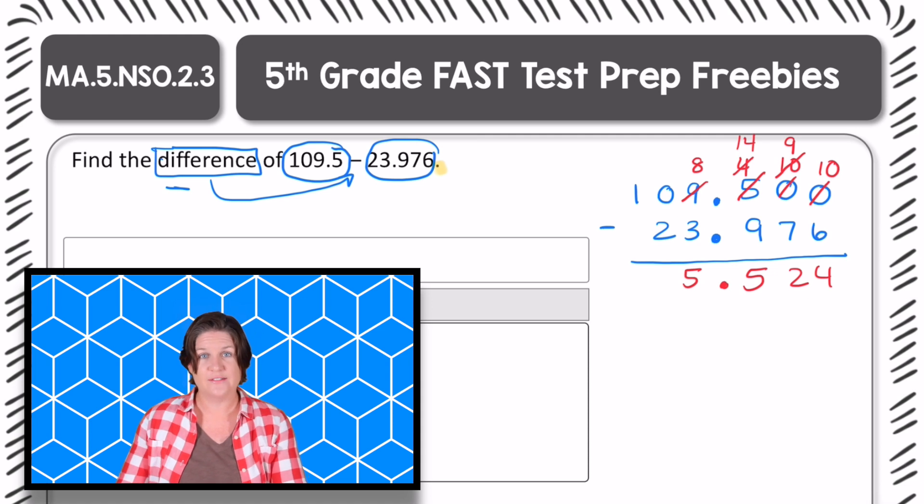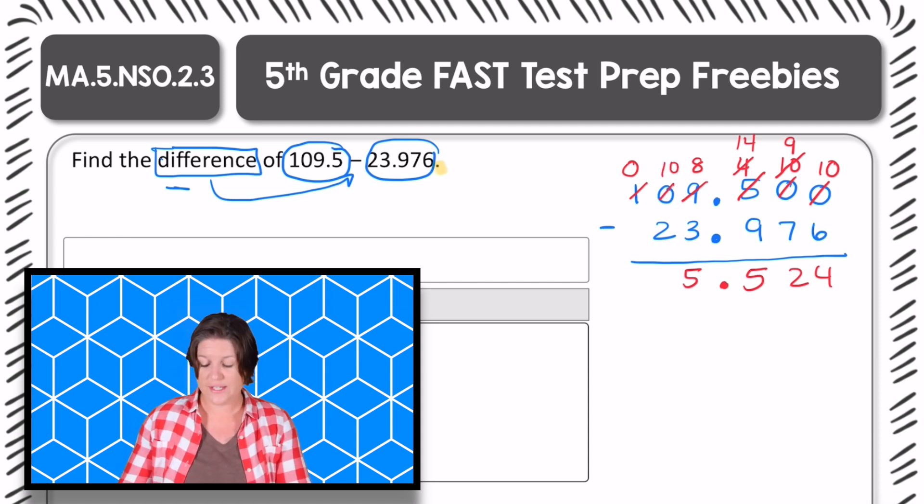Now we have eight ones minus three ones is five ones. Zero tens minus two tens. I need to regroup. So take one from the hundreds place and turn that into ten tens. Ten tens minus two tens is eight tens.